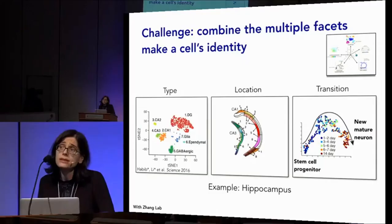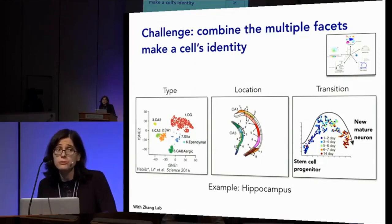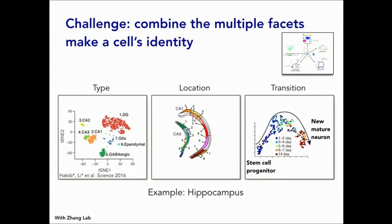All of these different facets combine together, and one of our challenges is never to forget that. We can't just look at one process and forget about all the others. The cell has a type, it is located somewhere, and it is undergoing multiple transitions at any moment in time. We are only starting to parse out how to think about each of these separately and about how they come together.